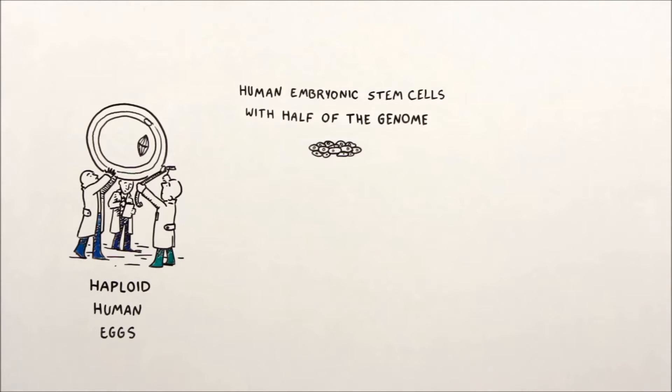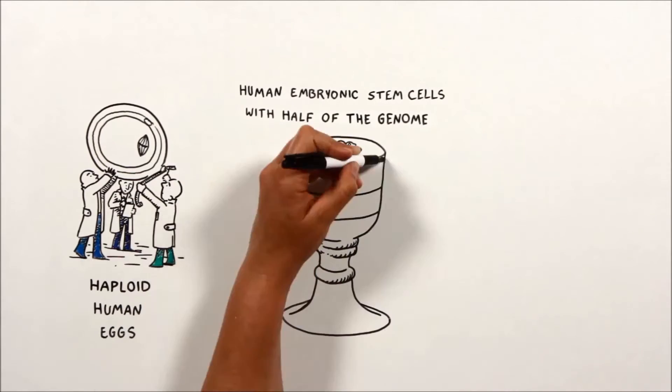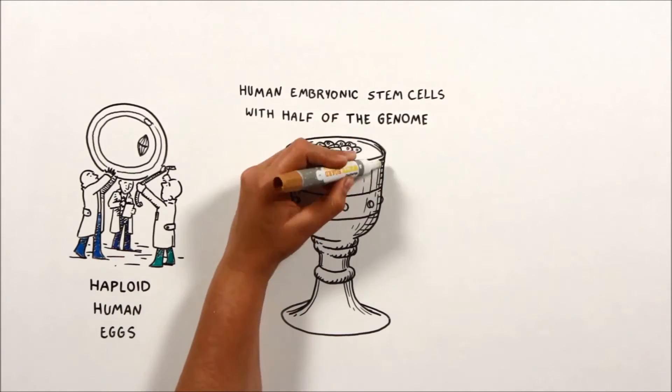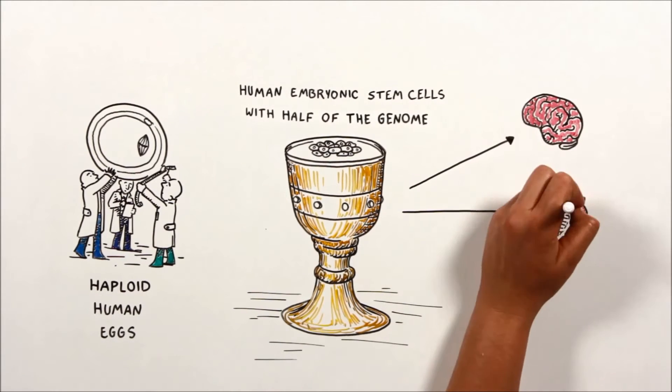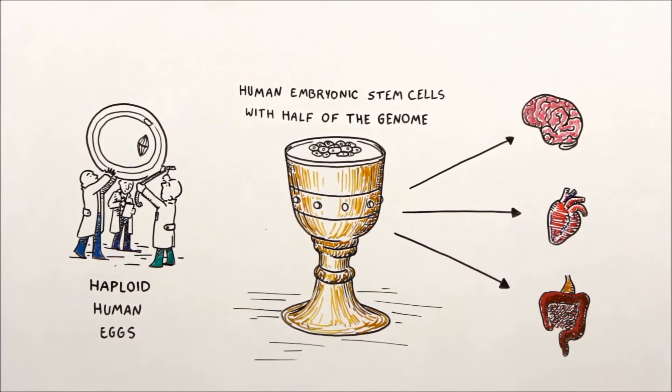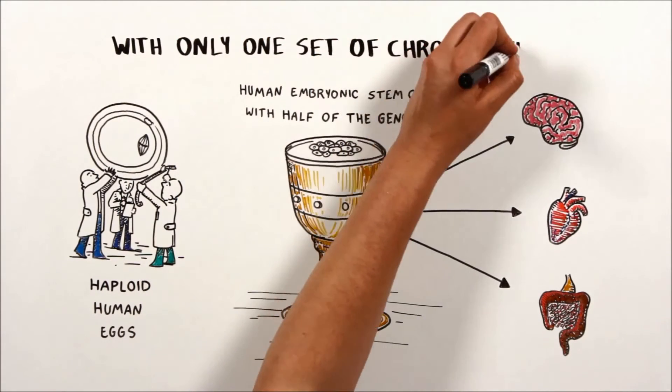Human embryonic stem cells are the holy grail of stem cells, as they can turn into any cell in our body. And amazingly, the haploid embryonic stem cells could become brain cells, heart muscle cells, gut cells, and more, with only one set of chromosomes.